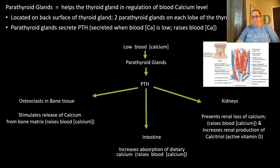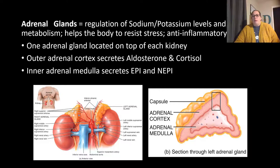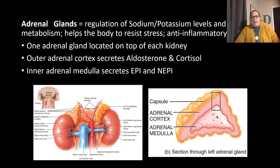The adrenal glands are important in regulating sodium and potassium levels and metabolism, helping the body resist stress (playing a role in the sympathetic fight-or-flight system), and serving as an anti-inflammatory. One adrenal gland sits on top of each kidney. The outer layer is the adrenal cortex, which secretes aldosterone and cortisol. The inner part is the adrenal medulla, which secretes epinephrine and norepinephrine.